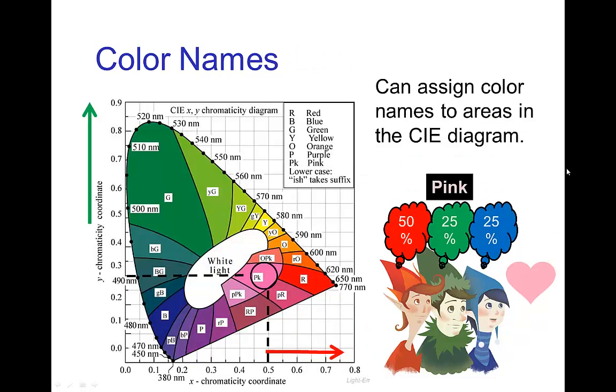Now, we can go around and actually assign color names to these various regions in this map. The central part is perceived as white, and we have different parts which are perceived as green, and yellow-green, and so forth. Here, I've marked an area which is 50% red cone, 25% green, 25% blue, and that happens to land in a region which is labeled pink.